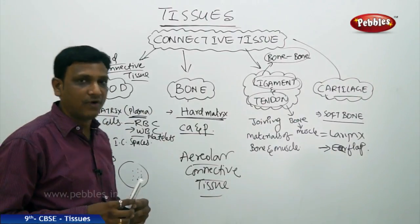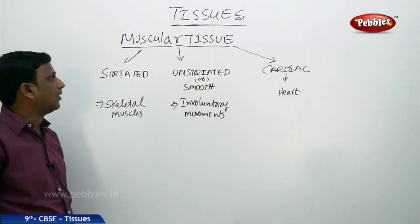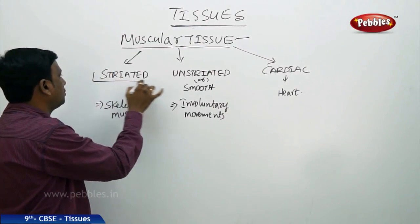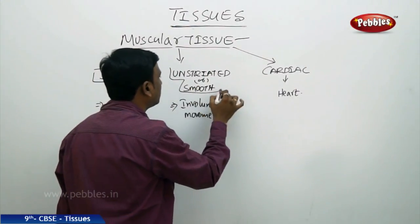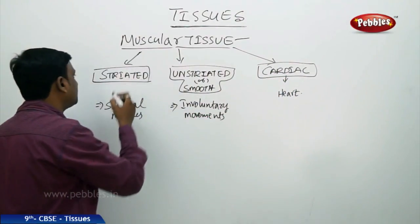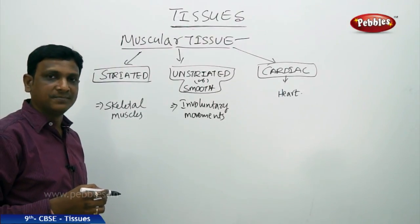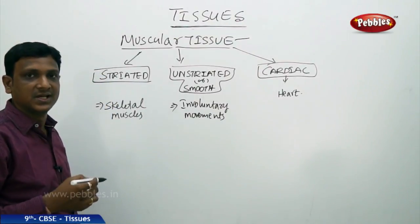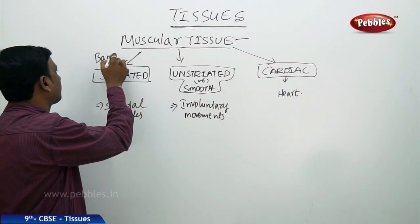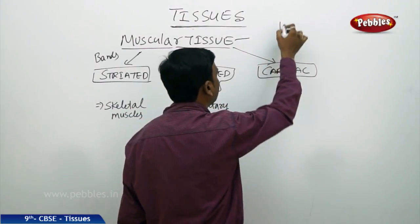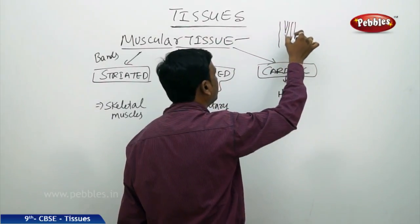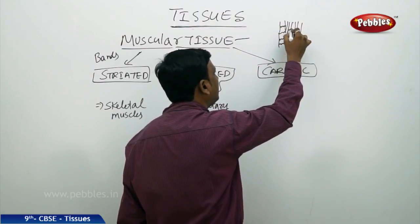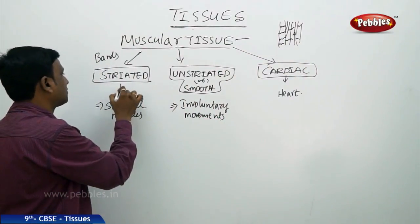Those are the important connective tissues found in animals. Now let us look at muscular tissue. There are three different types: striated, unstriated, and cardiac. Striations are bands. If you observe the structure of striated muscular tissue under a microscope, you find striations — bands visible on the muscle cells — and these are called striated muscles.